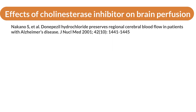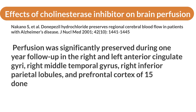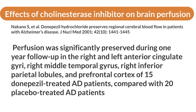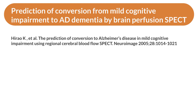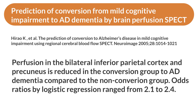A cohort study reported that brain perfusion was significantly preserved in the right and left anterior cingulate gyrus, right middle temporal gyrus, right inferior parietal lobule, and right frontal cortex in 15 patients with Alzheimer's disease who received donepezil hydrochloride compared with 20 patients who received placebo over one year. Additionally, the group that converted from mild cognitive impairment to Alzheimer's disease dementia had reduced perfusion in the bilateral inferior parietal cortex and precuneus compared to the non-conversion group; the odds ratio by logistic regression was reported to be 2.1 to 2.4.